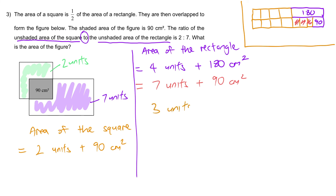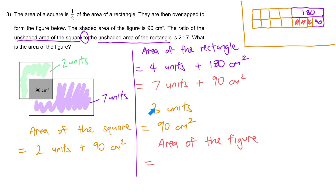Naturally the next step: 3 units is equal to 90 cm². Therefore we can go straight to the answer. The area of the whole figure is 9 units plus 90. Since 3 units equals 90, then 9 units equals 270, and 270 plus 90 is 360 cm².